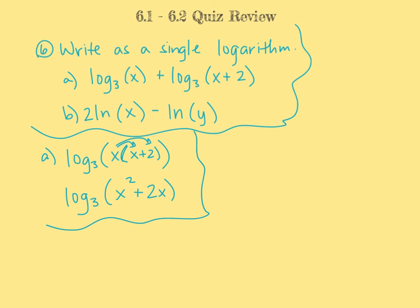In part B, we again want to condense and write as a single log. We have a 2 out front of the first term, so using the power property backwards, that becomes the natural log of x squared minus the natural log of y. Since these two logs are being subtracted, the quotient property says they combine as a quotient: the natural log of x squared over y. The quotient property states that log of u minus log of v equals log of u over v, and natural log works the same way.